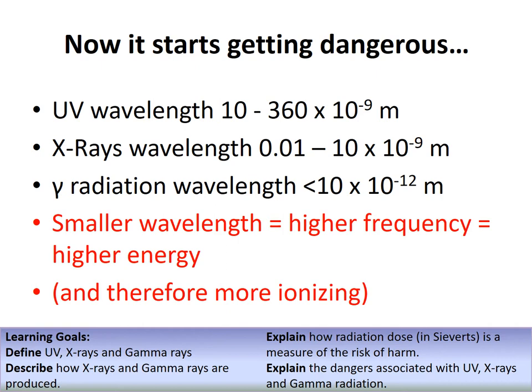Ionization, as you may remember from chemistry, is when an electron is either added to or removed from an atom. With these types of radiation, electrons are removed from atoms when the radiation hits them. When this happens in the cells of your body, it can cause mutations and lead to cancers - which is why we are now in a dangerous situation.